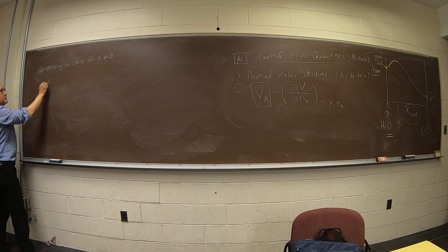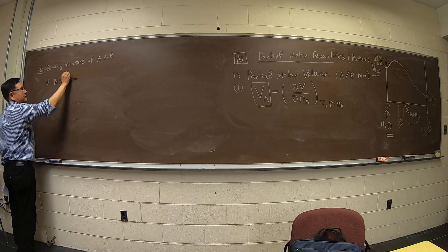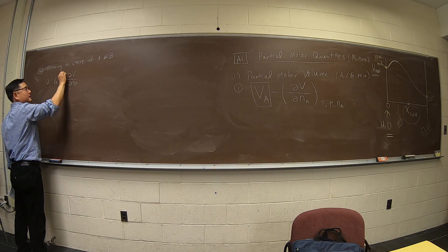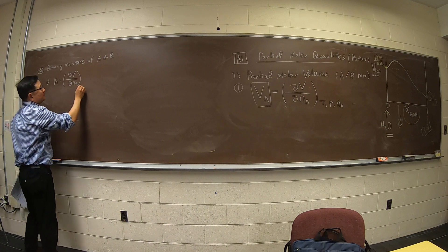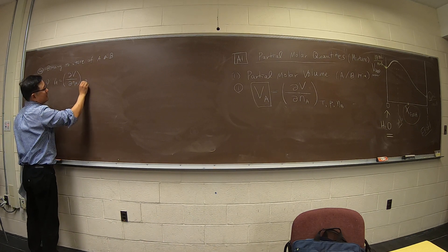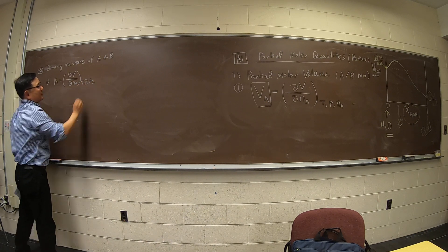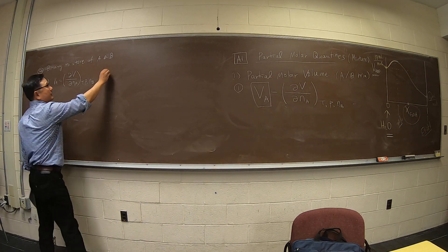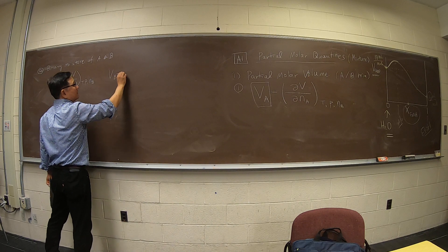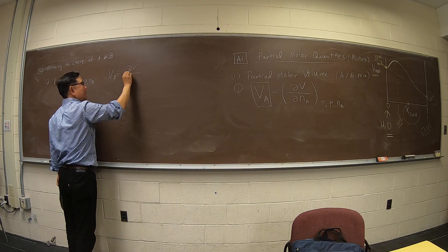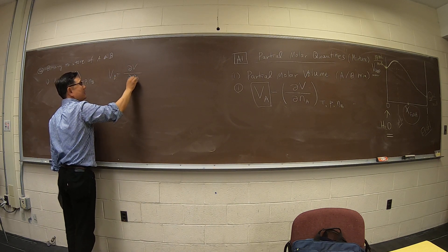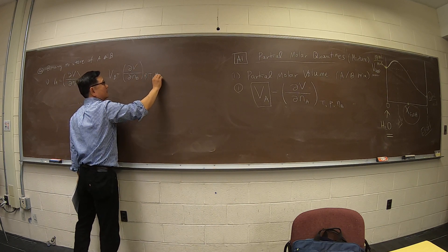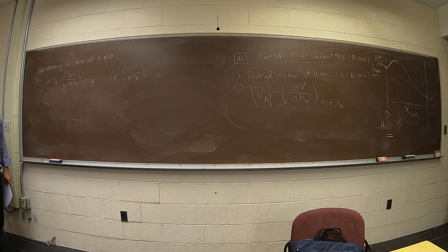So in the binary mixtures, BA, just for the practice, NA, adding one mole of A, TP, and keeping the other compound composition fixed. And same thing here, volume increase, adding one mole of B, T, and other compositions to be constant.